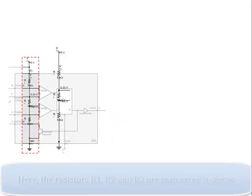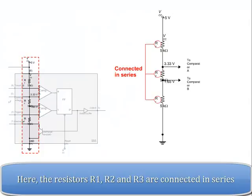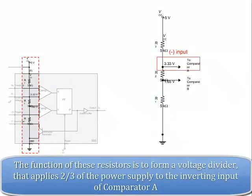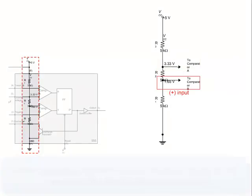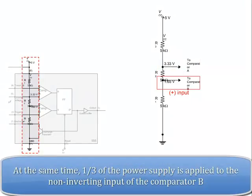Voltage Divider. The resistors R1, R2, and R3 are connected in series. The function of these resistors is to form a voltage divider that applies two-thirds of the power supply to the inverting input of comparator A. At the same time, one-third of the power supply is applied to the non-inverting input of comparator B.